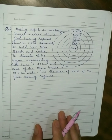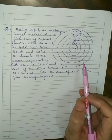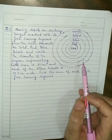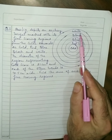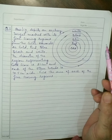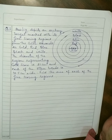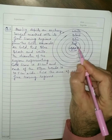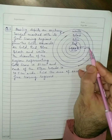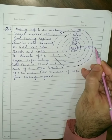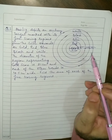Question 3: A figure of an archery target is given. It is marked with 5 scoring regions from the center outward as gold, red, blue, black, and white. The diameter of the region representing the gold score is 21 cm, and each of the other bands is 10.5 cm wide.